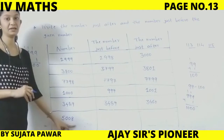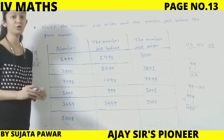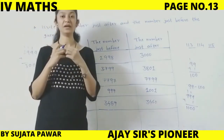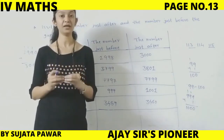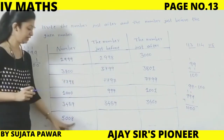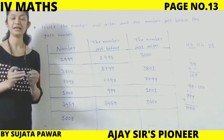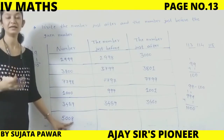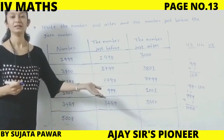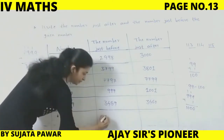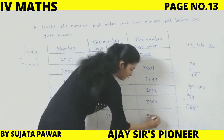Next: 5,008. Sabse pehle humein number ko properly reading karni chahiye — agar hum reading properly nahin karte hain to just after aur just before nahin likh payenge. 5,008 mein single unit ki place pe single number hai aur 10 aur 100 ki place empty hai, that means 0 hai. So 8 before is 7, that means 5,007. And just after: 8 after 9, so 5,009.